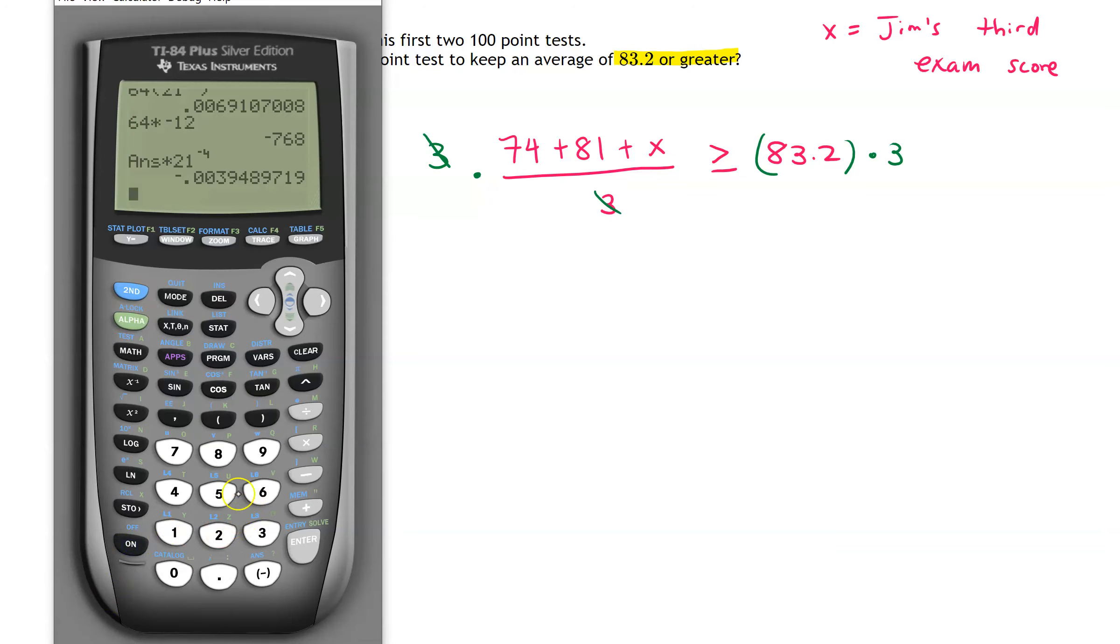So let's go ahead and do 83.2 times 3, and that gives us 249.6.